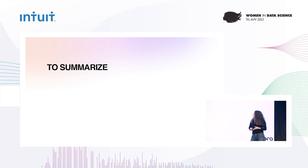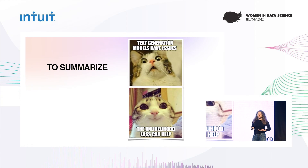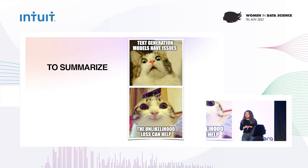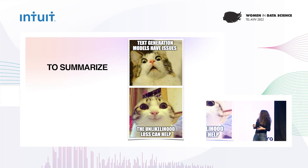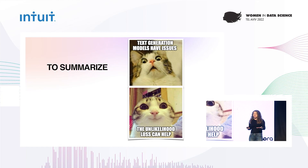So to sum it up — text generation models tend to have different kinds of issues, but the unlikely loss can help solve some of them. So the next time you have trouble with your text generation model, you're welcome to try that. It might help. Thank you.